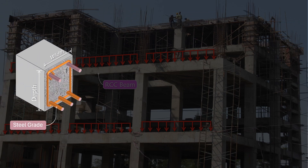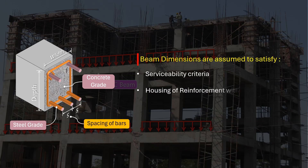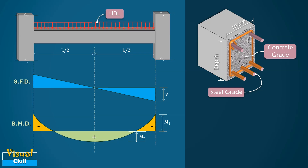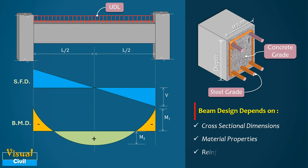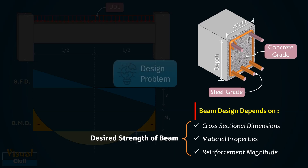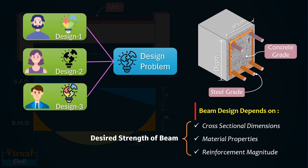Since the exact dimensions are initially unknown, we make assumptions of dimensions to meet serviceability criteria, housing of reinforcement with suitable spacing and cover to the reinforcement. Based on the analysis results like moments and shear force, we have to design the section. The beam design lacks a unique solution as it depends on assumed cross-sectional dimensions, material properties, and reinforcement magnitude. The design aims to achieve the desired strength of the beam through various combinations of these variables. Therefore, different designers may propose different solutions that satisfy design criteria. Henceforth, the initial assumption of cross-sectional dimensions and the materials plays an important role.